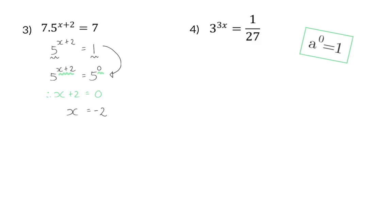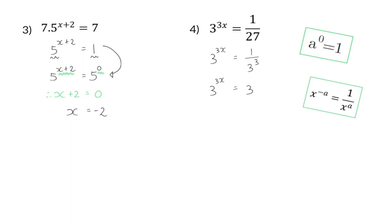In example 4, we now also have a fraction. I am going to start off by still changing all the bases to prime numbers. On the left we have a 3, and on the right it will become 1 over 3 to the power of 3. Now, I would like the base on each side to be the same, and for that I am once again going to use previous knowledge of an exponential definition. On the left we have a base of 3, and on the right I would also like a base of 3. That means the denominator needs to move to the numerator, and for that the exponent becomes negative.